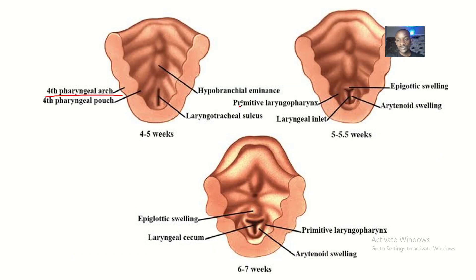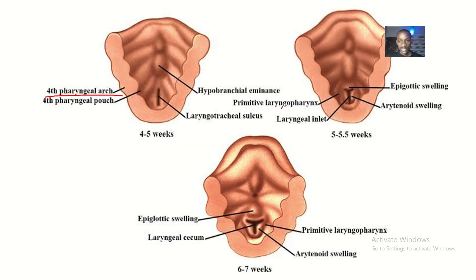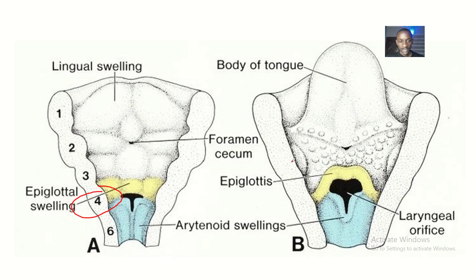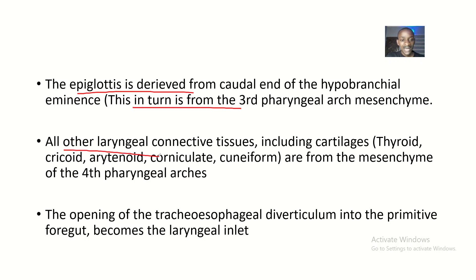The epiglottis is derived from the caudal end of the hypobronchial eminence, which in turn is from the third pharyngeal arch mesenchyme. So you could safely say that the epiglottis is a derivative of the third pharyngeal arch mesenchyme.